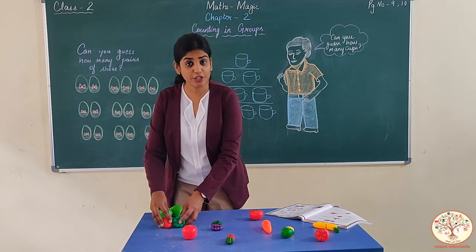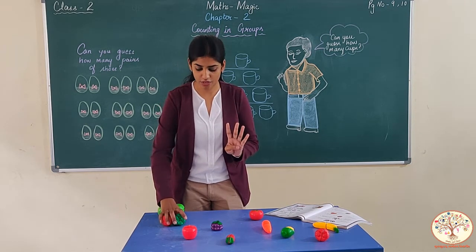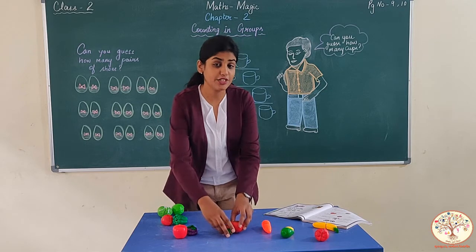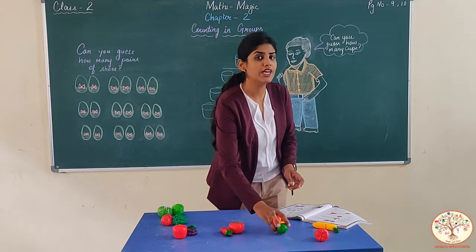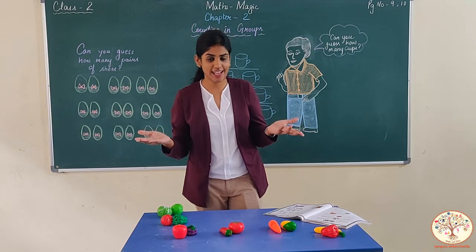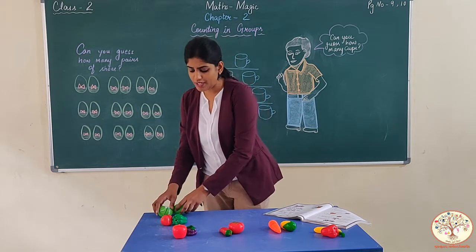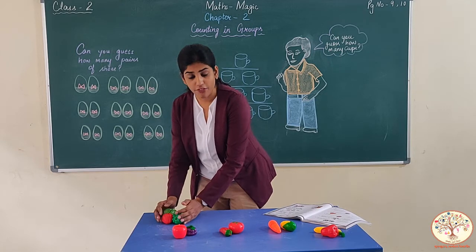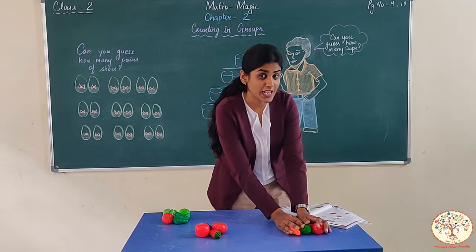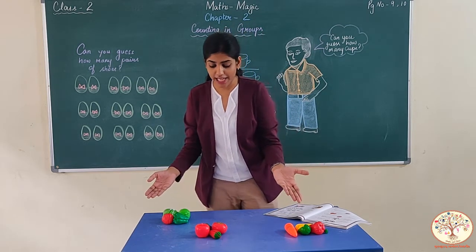2 and 2 makes 4. Then 4 and 2 makes 6. 6 and 2 makes 8. 8 and 2 makes 10. 10 and 2 makes 12. See, kam time laga na? Again 12 objects. Kam time laga hai.